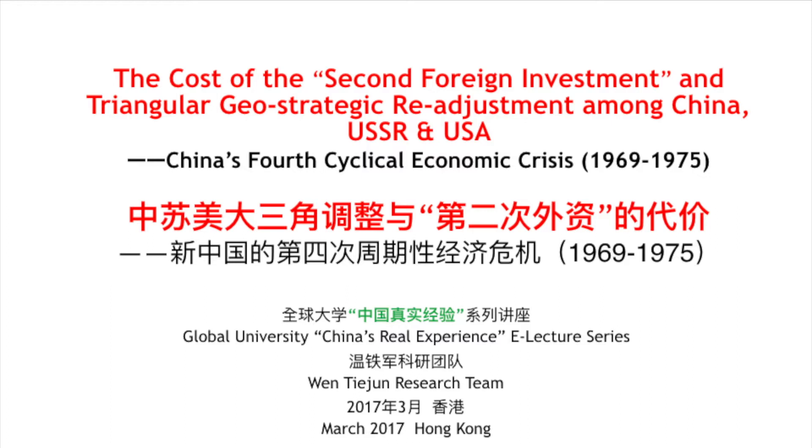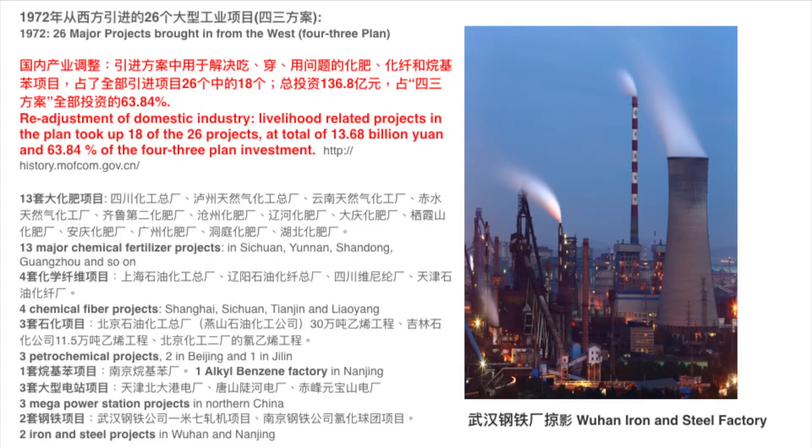Let me continue my analysis about the fourth economic and psychological crisis. When China started to absorb these foreign machines, facilities, and techniques to re-adjust the Russian-style heavy industry, it was successful in achieving a better structure of industries. A large amount of textile industrial products, chemical fertilizer products, and petrochemical products satisfied social needs, so agricultural products also increased. Since the beginning of the 1970s,